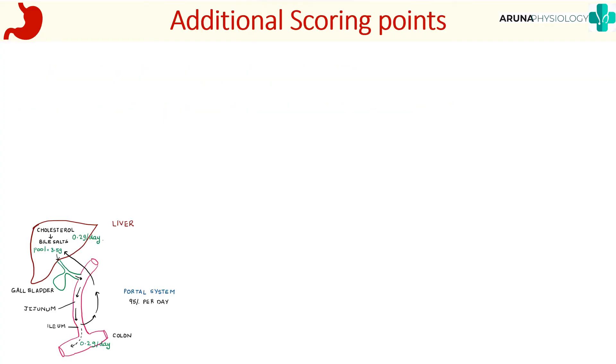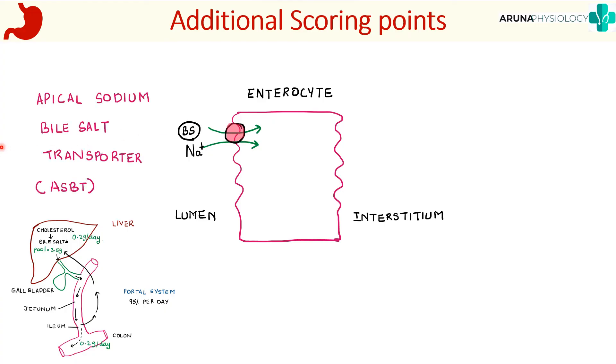Some additional scoring points. I am just going to go more in detail about how these bile salts are reabsorbed back into the portal system. Suppose this is an enterocyte, this is the interstitium, and this is the lumen. The bile salts enter the enterocyte from the lumen via this transporter. What is the name of this transporter? It is called apical sodium bile salt transporter, or ASBT, because it co-transports bile salts and sodium.